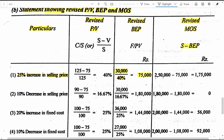For margin of safety in situation 1, the revised actual sales is 2 lakh 50,000 rupees — calculated by adding 25 percent to the original 2 lakh rupees. Revised sales of 2 lakh 50,000 minus BEP of 75,000 gives a margin of safety of 1 lakh 75,000 rupees.